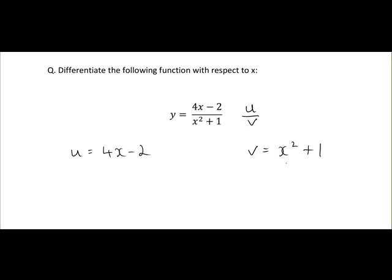Next, we differentiate both of them. So we get du/dx, we're differentiating u. 4x, when we differentiate that, we get 4. Differentiate a constant, you get 0.